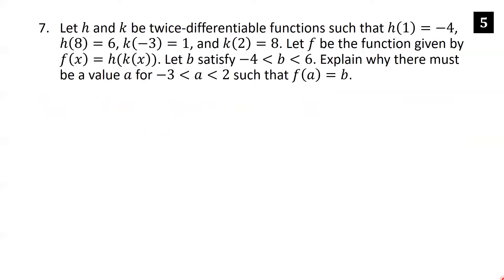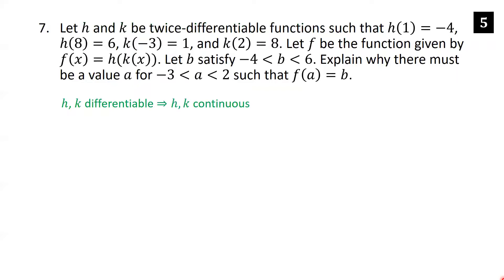Let h and k be twice differentiable functions with h(1) = −4, h(8) = 6, k(−3) = 1, and k(2) = 8. Let f(x) = h(k(x)). Given b between −4 and 6 exclusive, explain why there must be a value a between −3 and 2 such that f(a) = b. Since h and k are differentiable, they're both continuous, and differentiability implies continuity.